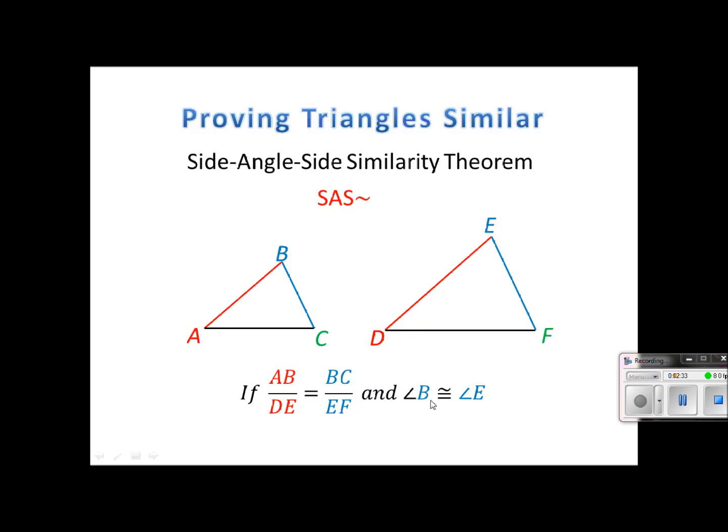And then of course I can't forget about the angles. I need to have that the included angle in between the two sides or sets of corresponding sides that are proportional. Then that's enough to show that they are similar. So triangle ABC is similar to triangle DEF.